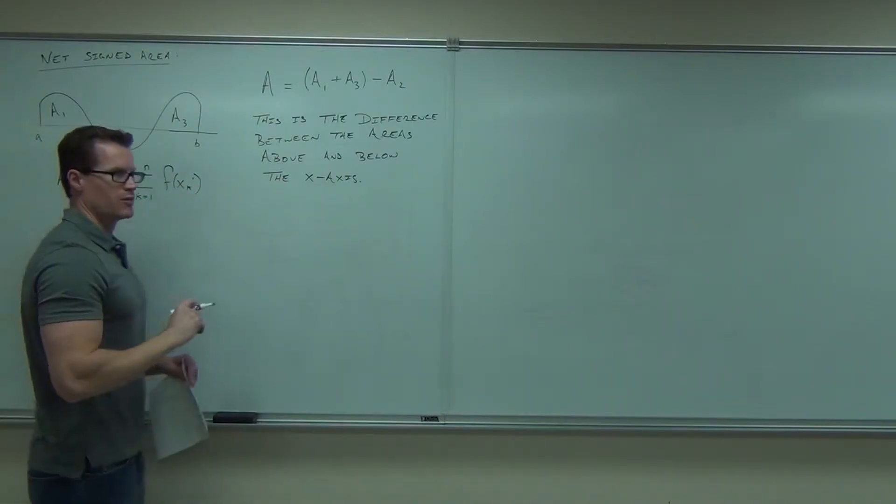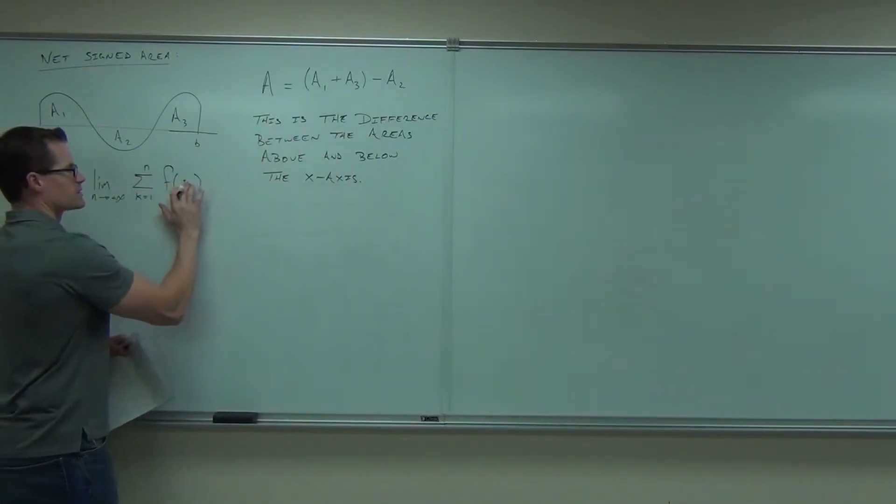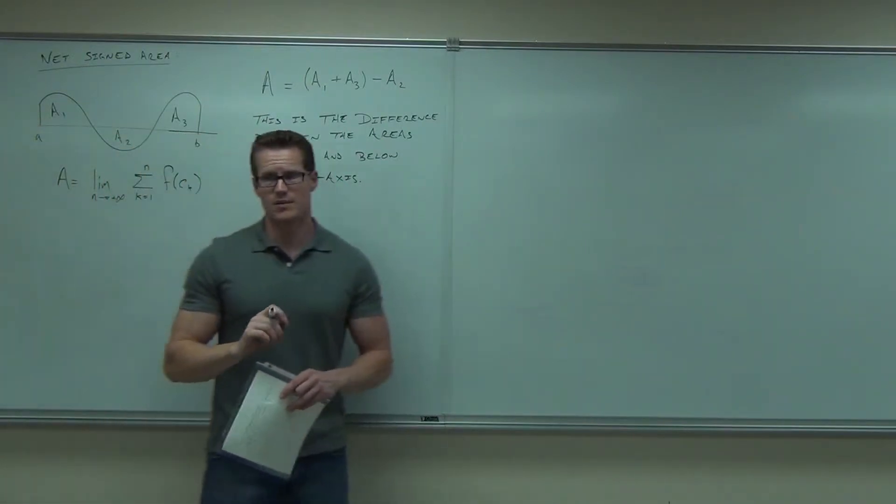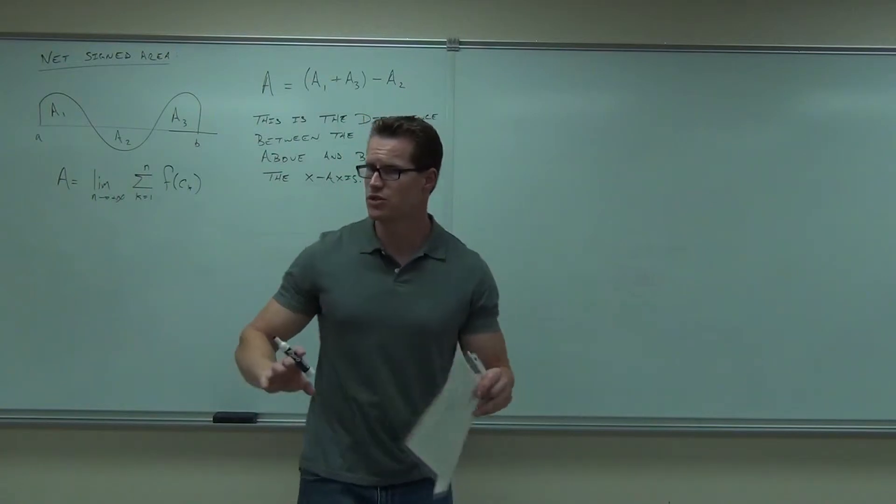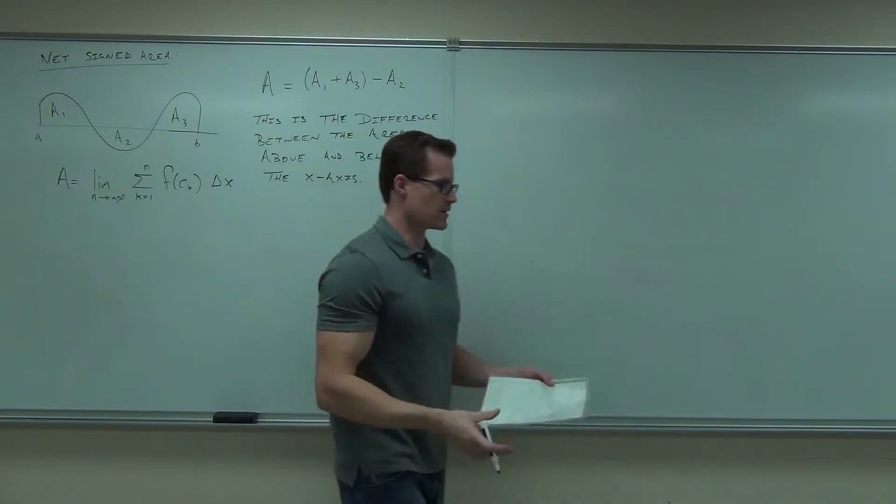Also, for those of you who have been doing your homework, do you realize that this is, in the book, represented as c sub k? You've seen that as well, right? It means the same thing. So I could use that interchangeably. That is net signed area. What we've been doing is net signed area.